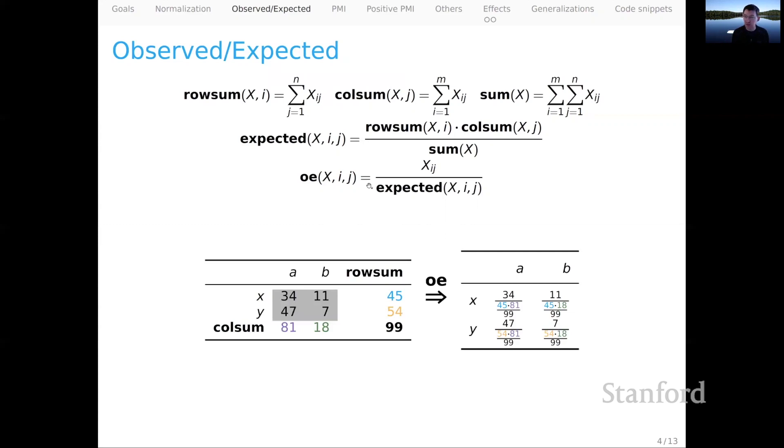So in a bit more detail, here's how the calculations work. We've got this tiny little count matrix here. Let's look at cell xA. It's got a count of 34. That's our observed count over here in the numerator. The denominator is the product of the row sum and the column sum, 45 by 81, divided by the sum of all the values in this matrix, which is 99. We repeat that calculation for all the other cells, making the corresponding adjustments. And that gives us a completely reweighted matrix.